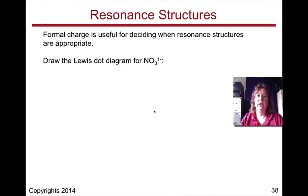Our last concept that we're going to take a look at is something called resonance structures. Formal charge is useful for deciding when resonance structures are appropriate. So let's draw the Lewis dot diagram for NO3 minus 1.